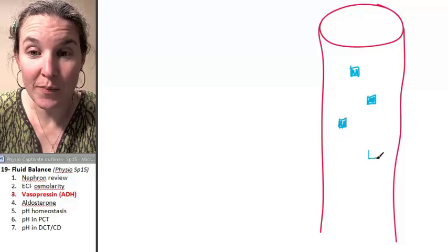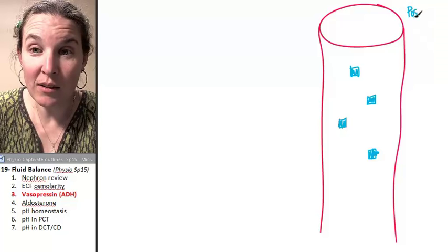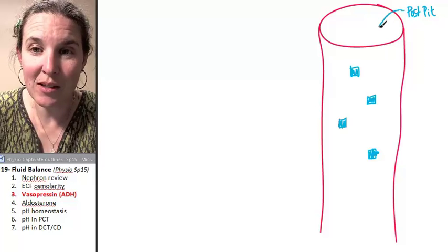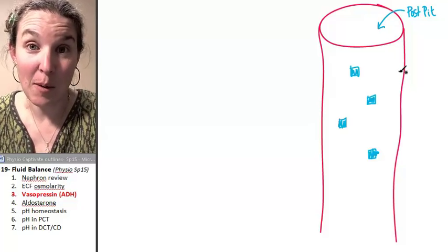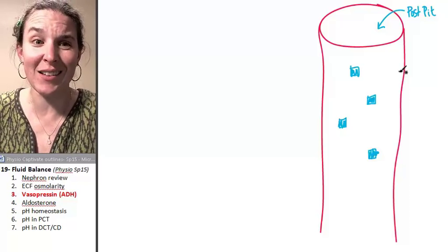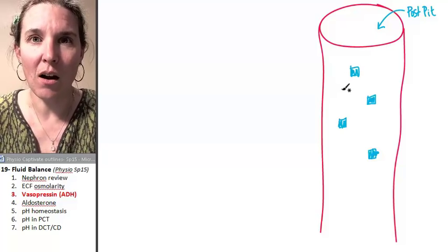This is vasopressin or antidiuretic hormone, ADH. So, thank you, post pit. Let's just make a little note that post pit is the one who dumped vasopressin in because of the osmoreceptors that fired the message saying, dude, we're not stretching enough. So, here comes vasopressin.